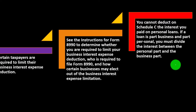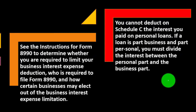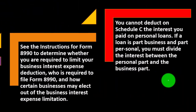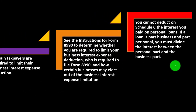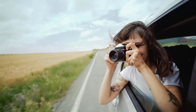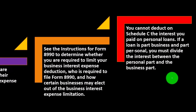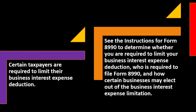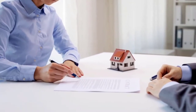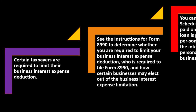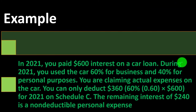If a loan is part business and part personal, you must divide the interest between the personal and business parts. You'd want to avoid this in normal practice — for example, taking out one loan to fund both a business need and a personal vacation complicates things. Sometimes you can't avoid it, like if you have a loan on your home and use part of it as a home office, requiring allocation between Schedule C and Schedule A. A car loan could be another instance where business and personal use must be split.